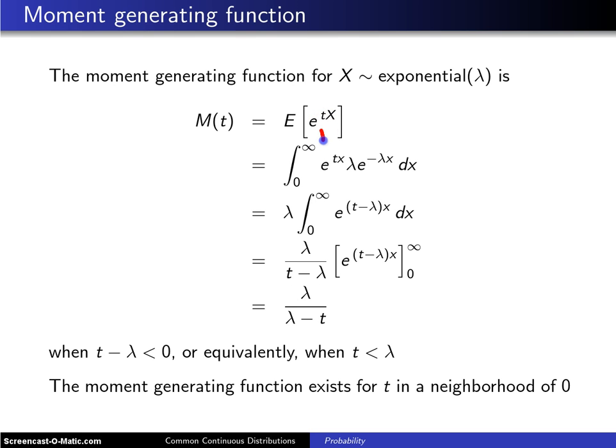The e to the tx will get copied in right here when computing the expected value. And lambda e to the minus lambda x is the probability density function of the exponential distribution.